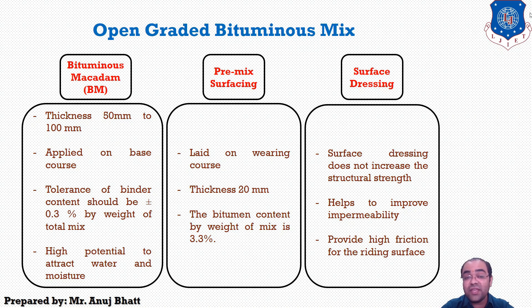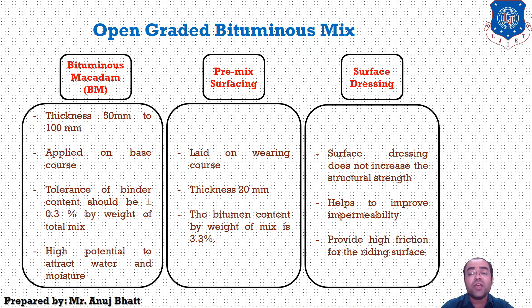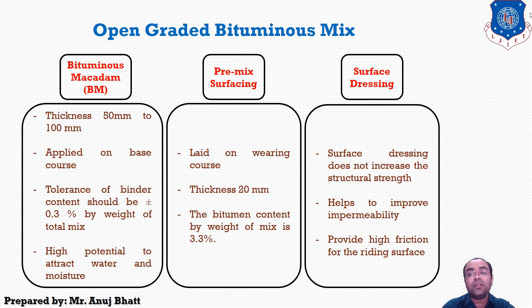Now talking about Pre-Mixed Surfacing (PMS): PMS is laid as a bearing course with a thickness of 20 mm. The mix will comprise two single-size aggregates — one passing through 22.4 mm and retained on 11.2 mm, and the second passing through 13.2 mm and retained on 5.6 mm. For preparation of the premix, a hot mix plant of appropriate capacity and type shall be used. The hot mix plant shall have separate dryer arrangement for heating the aggregate.